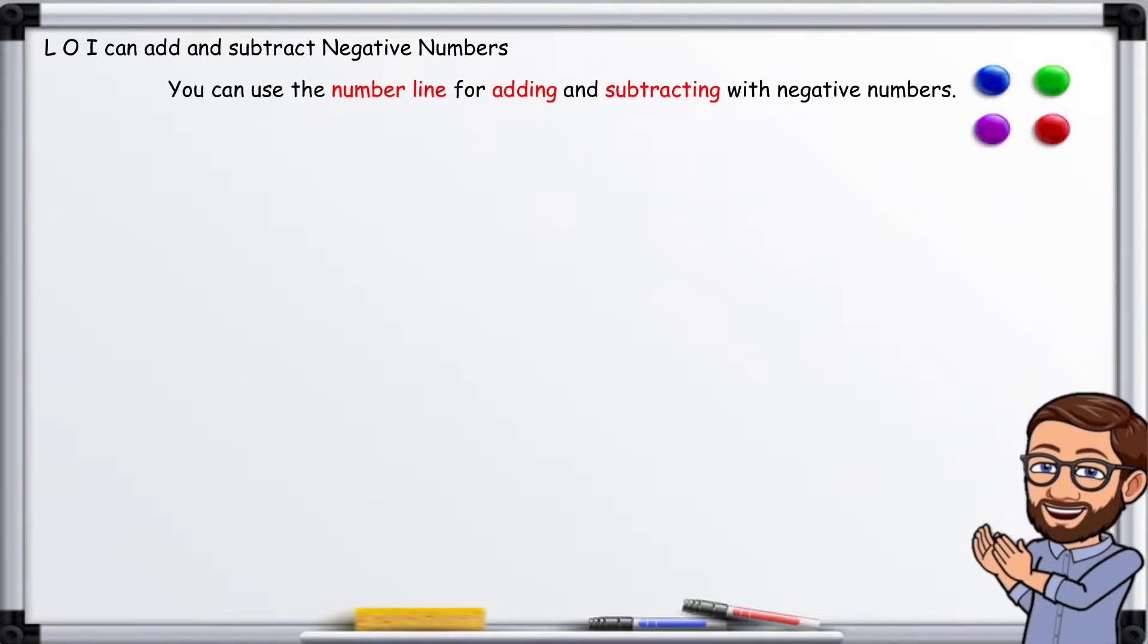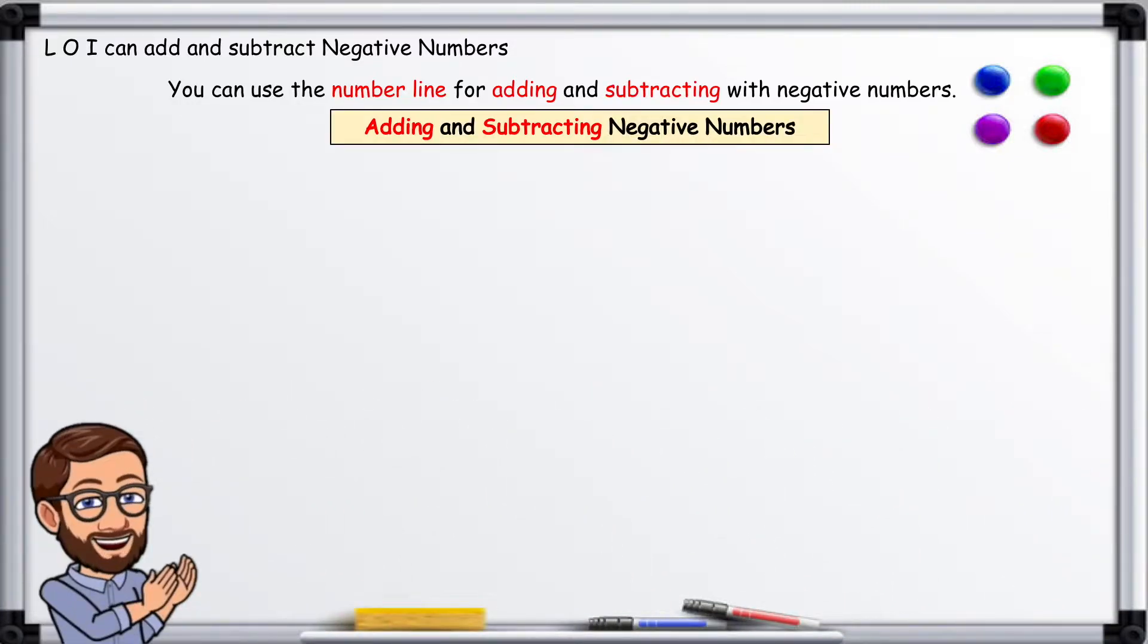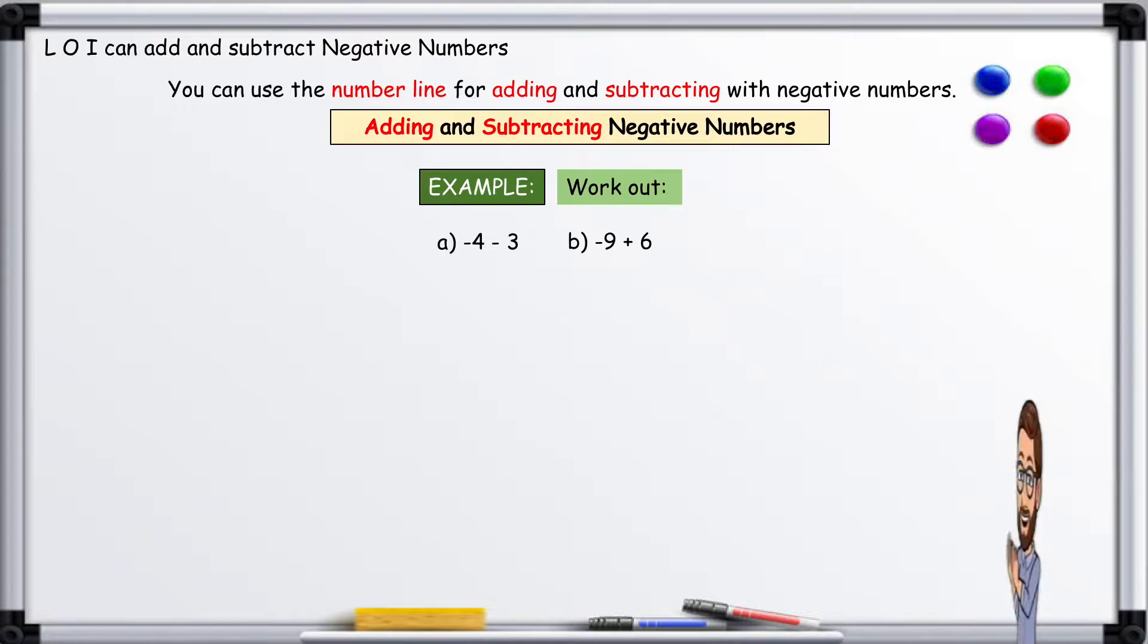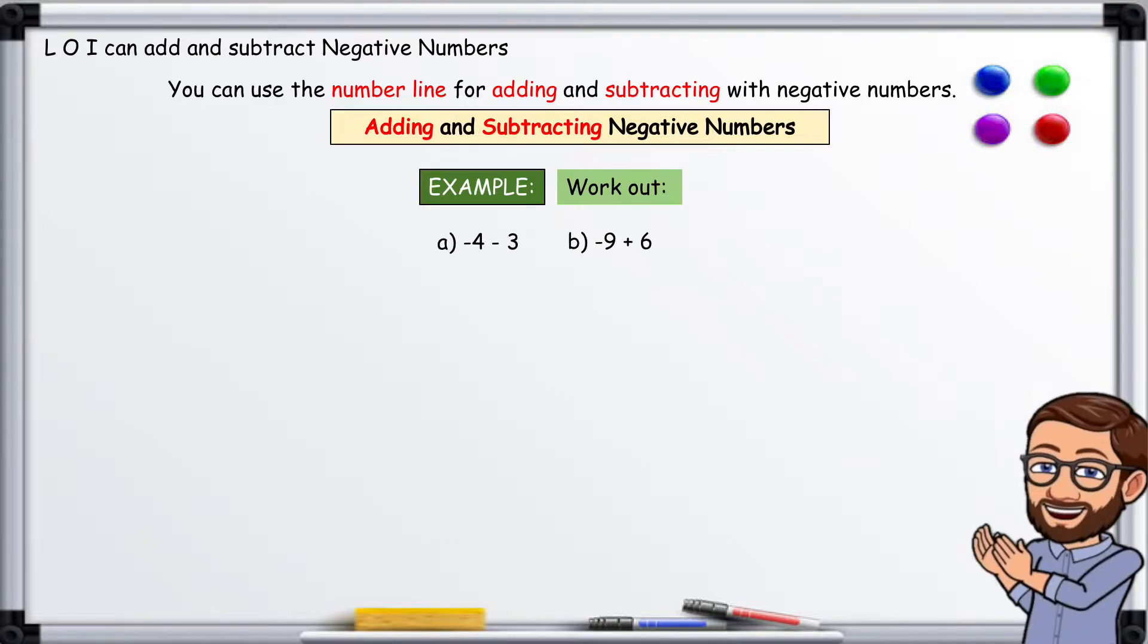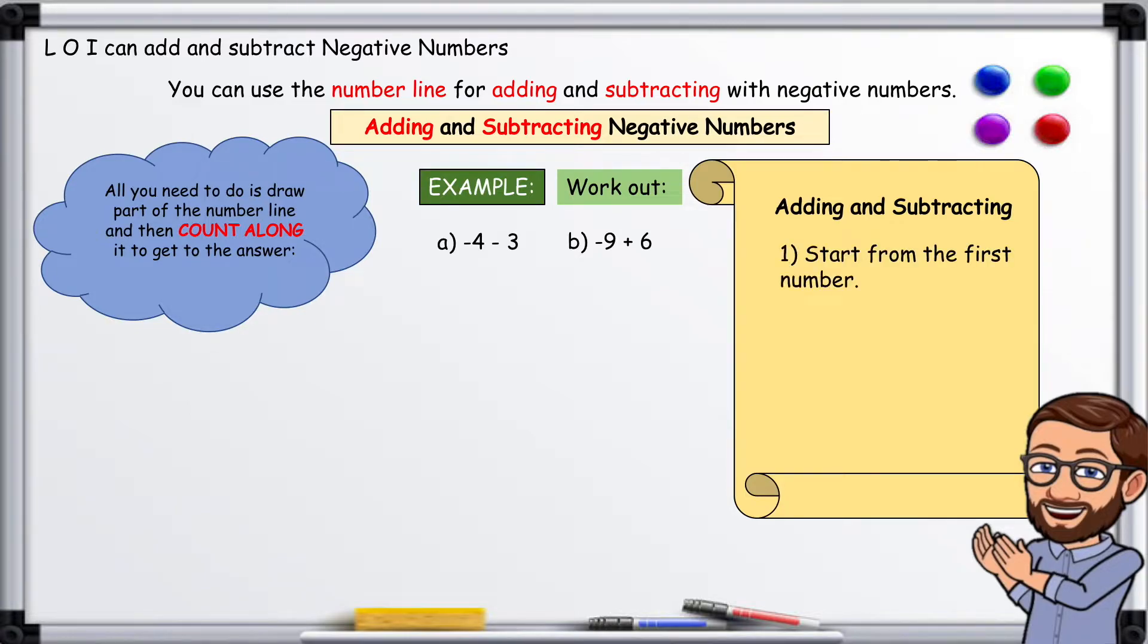Adding and subtracting negative numbers. Example: Work out a) -4 - 3, b) -9 + 6. All you need to do is draw part of the number line and then count along to get to the answer. Adding and subtracting: Start from the first number. When adding, count right along the number line. For subtracting, count left.